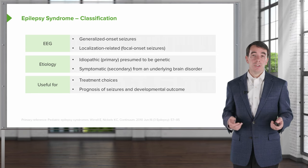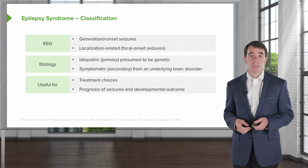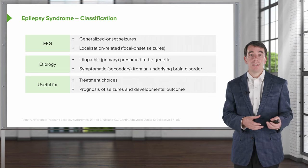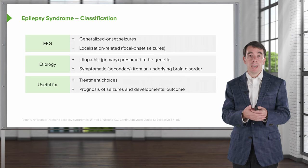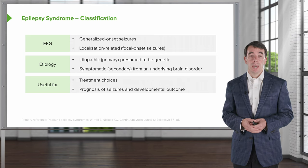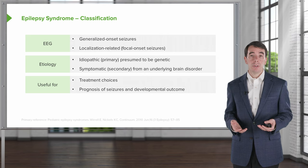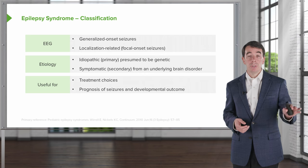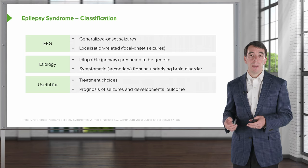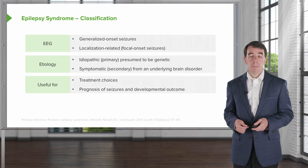In addition, this helps with prognosis. Symptomatic or secondary epilepsies that come from some underlying cause tend to have a worse prognosis, are more medication refractory, and may result in early death compared to the idiopathic primary epilepsies.